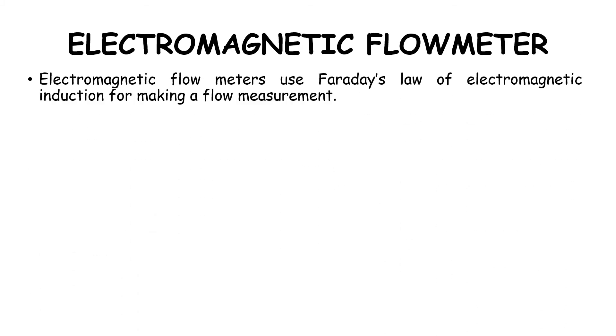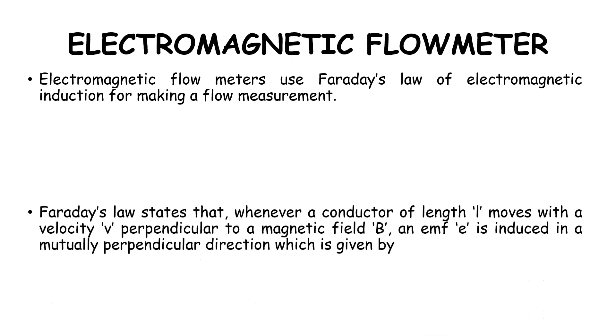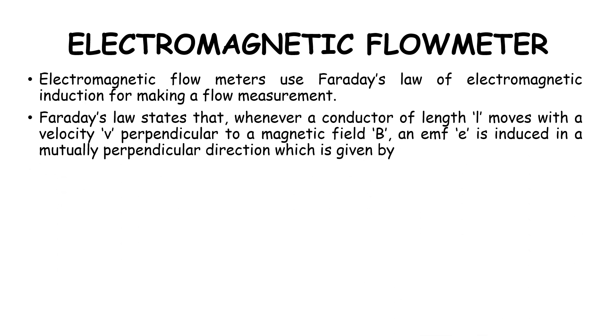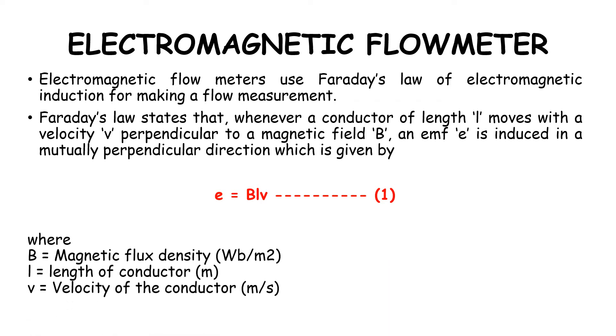As said earlier, the electromagnetic flow meter uses Faraday's law of electromagnetic induction for making a flow measurement. Faraday's law states that whenever a conductor of length l moves with velocity v perpendicular to the magnetic field B, an emf e is induced in a mutually perpendicular direction which is given by the formula e = Blv, where B is the magnetic flux density, l is the length of the conductor, and v is velocity of the conductor.